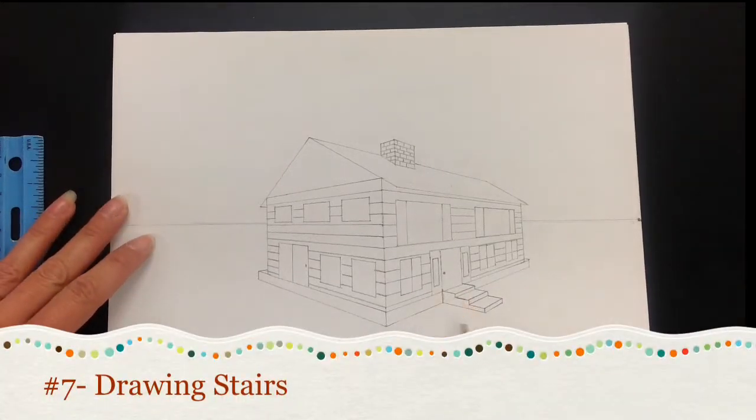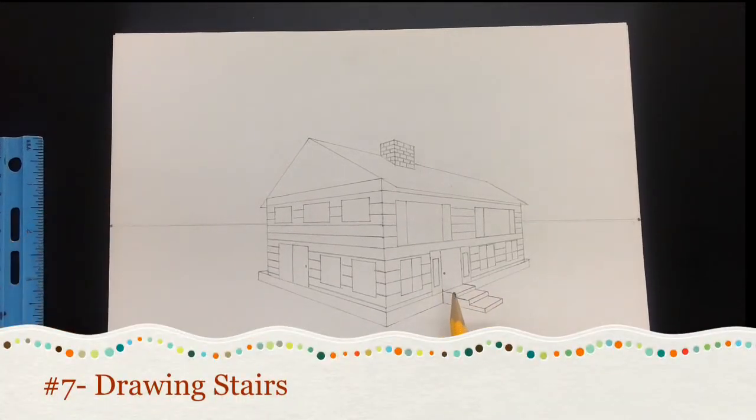This video will show you how to add stairs to your house. Now because you typically look down on your stairs, we have what's called that bird's eye view, which means we're going to be crossing over to the opposite vanishing point.